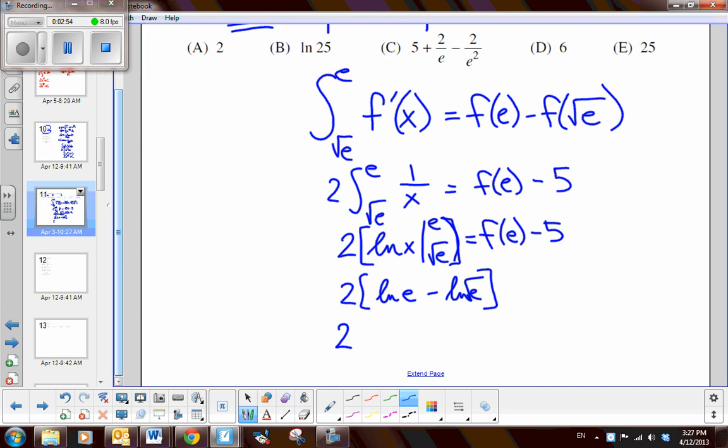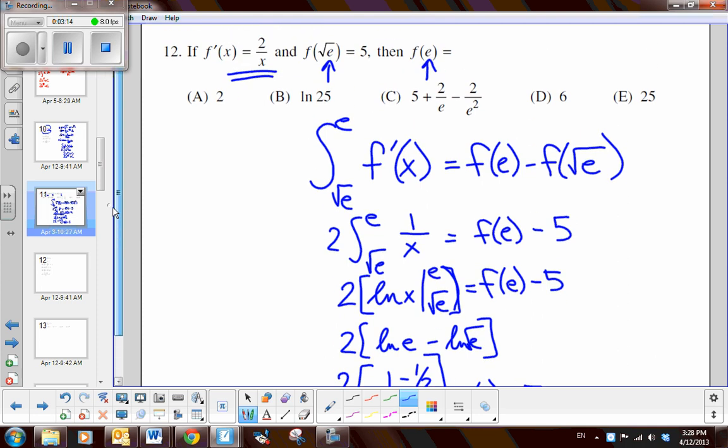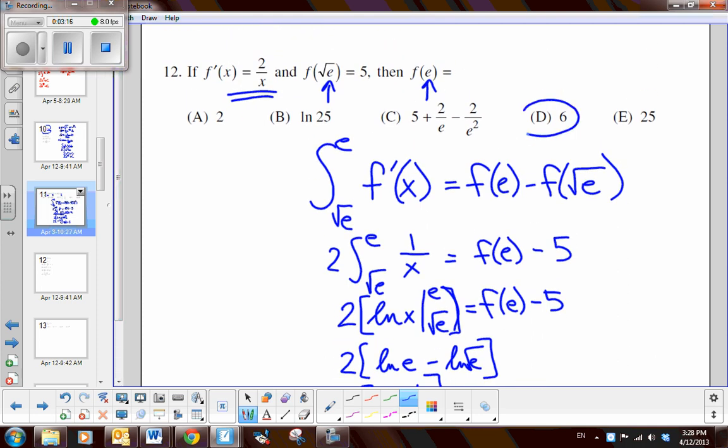Which the natural log of e is 1. And the natural log of e to the 1 half is 1 half. So 1 minus 1 half is a half. And a half of 2 is 1. So 1 equals f of e minus 5. So I add 5. So then the value is 6 for f of e. And is there a 6? There is. It is letter D.